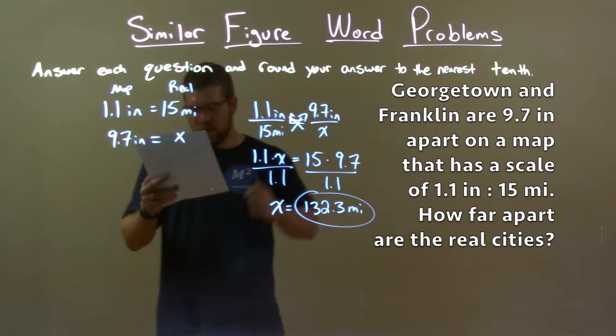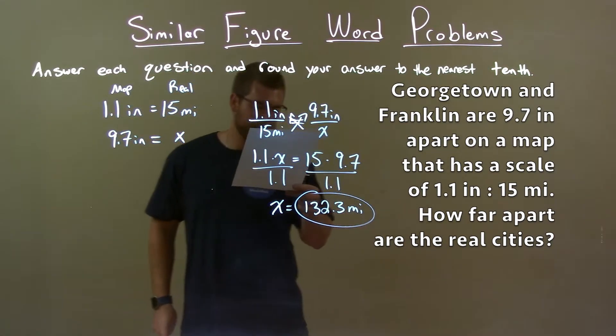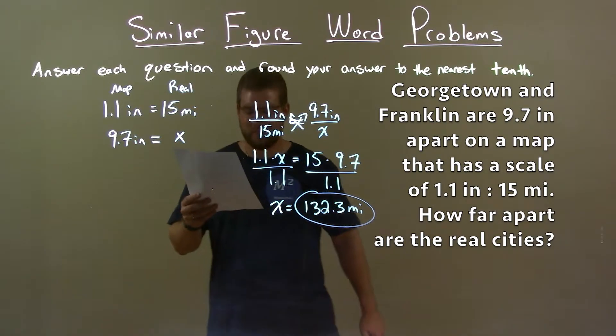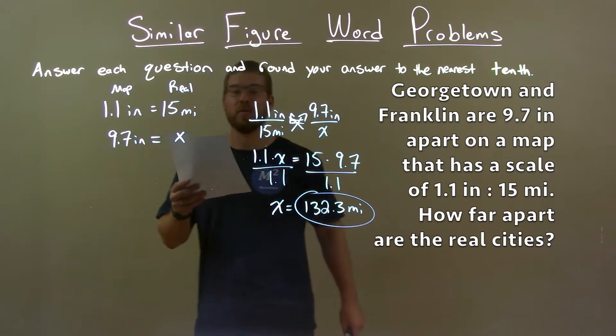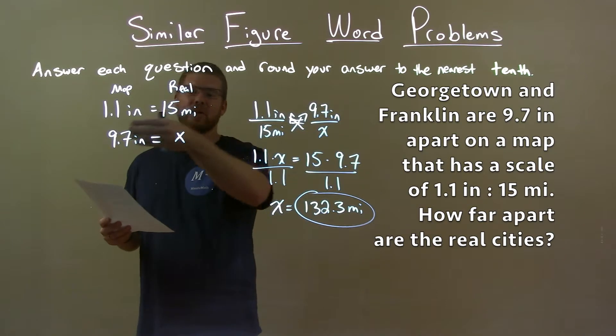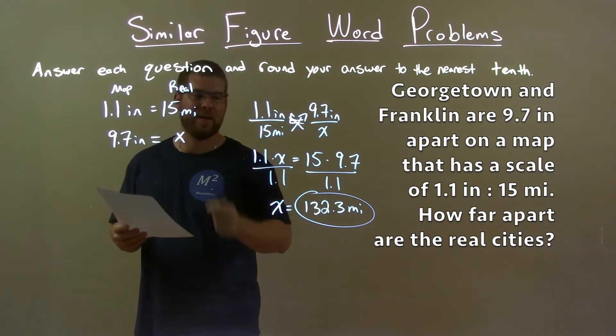Quick recap. Georgetown and Franklin are 9.7 inches apart on a map that has a scale of 1.1 inches to 15 miles. How far apart are the real cities? So we took that information to create this. The scale as well as relationship between the map and our real cities being that variable.